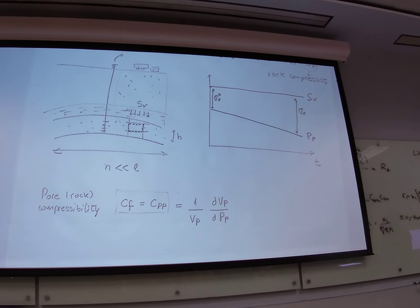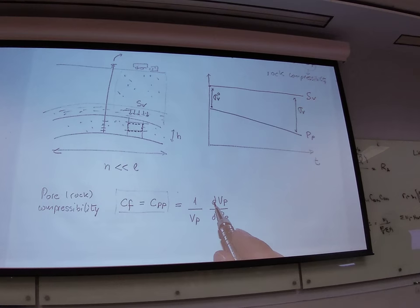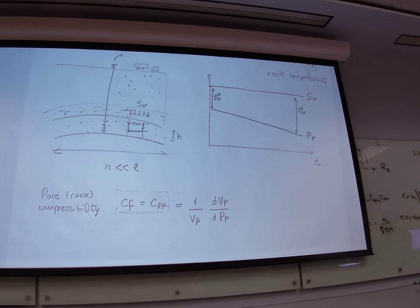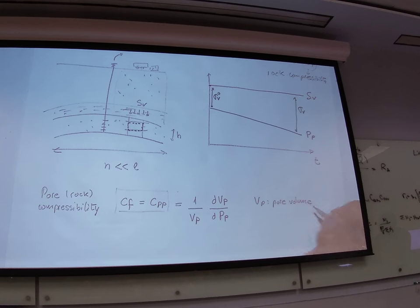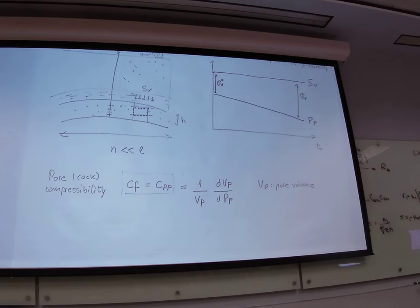So our objective is going to be to find an equation to tell what is this as a function of elasticity. What is that character on top of BP? It's a one. One divided by BP, where BP is the pore volume, and BP is the pore pressure.